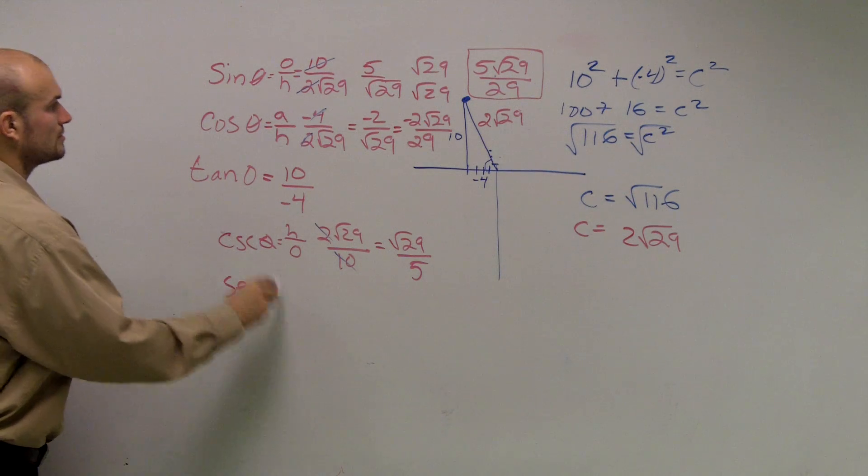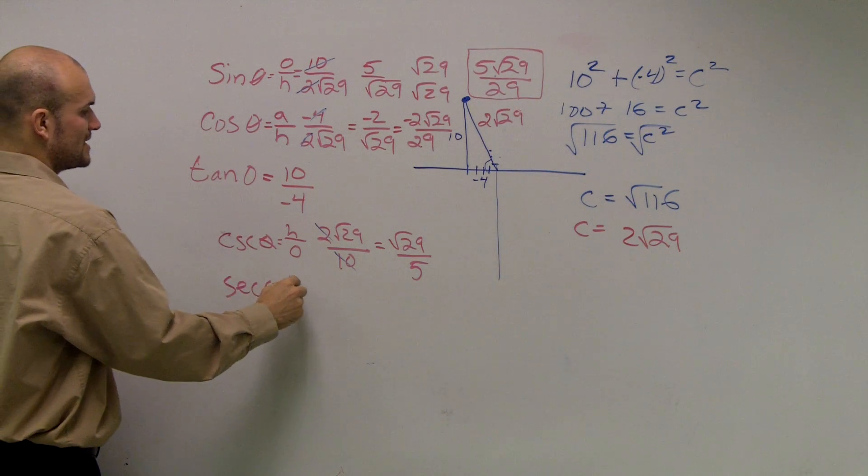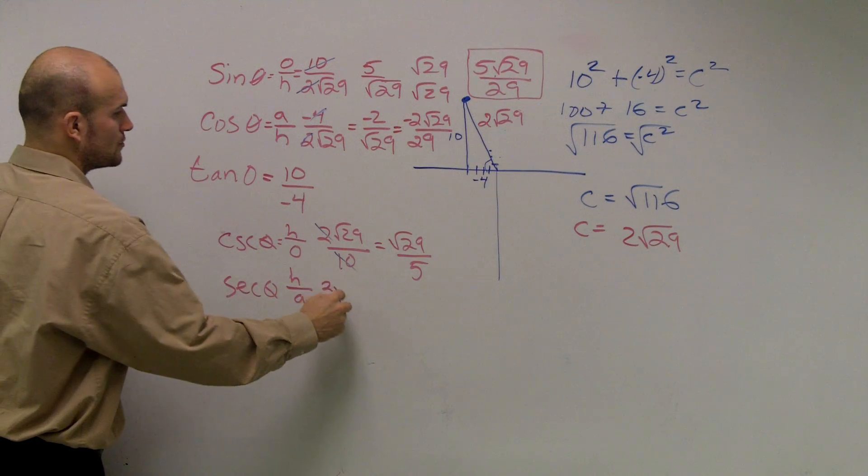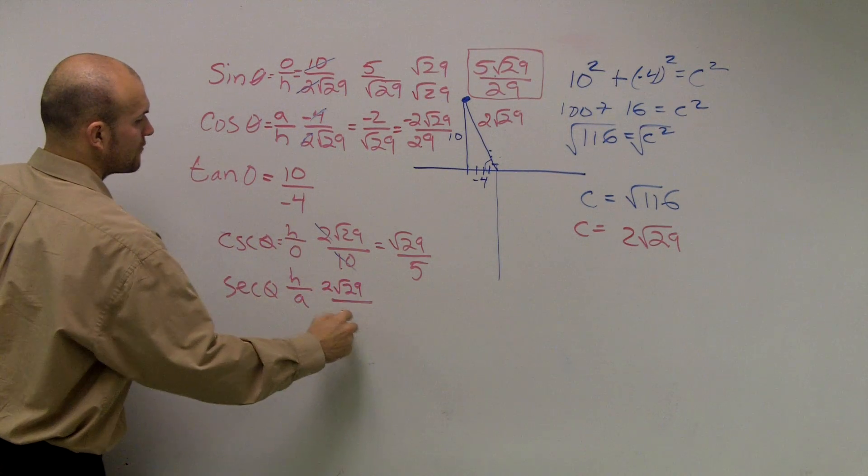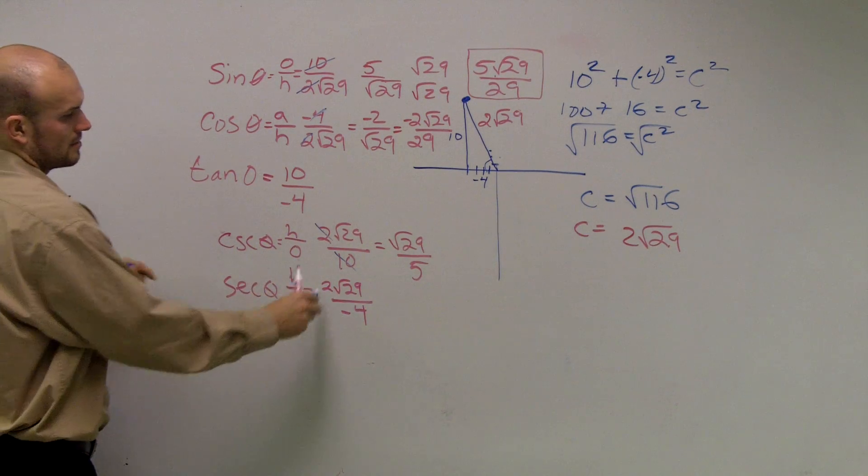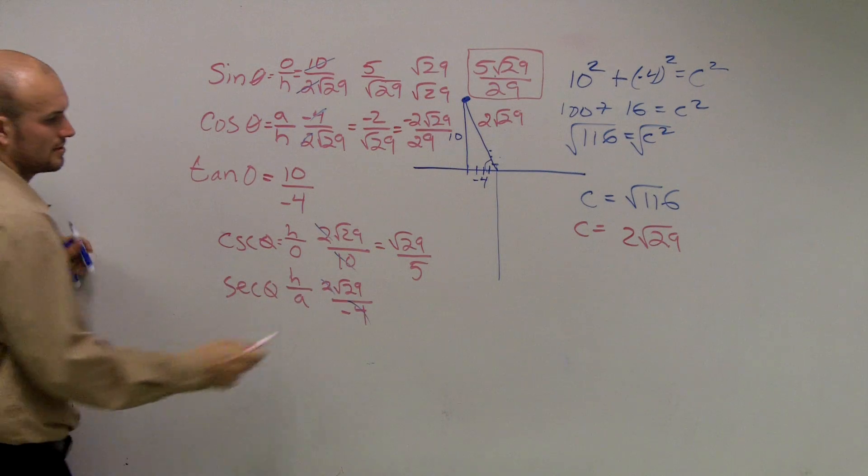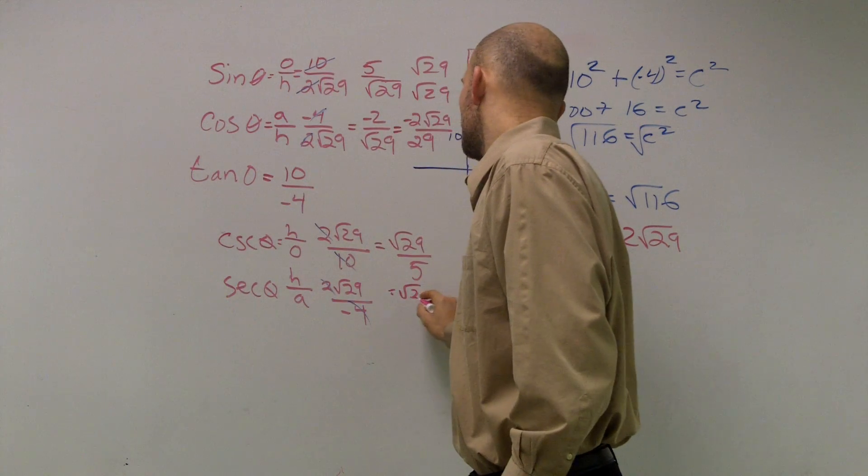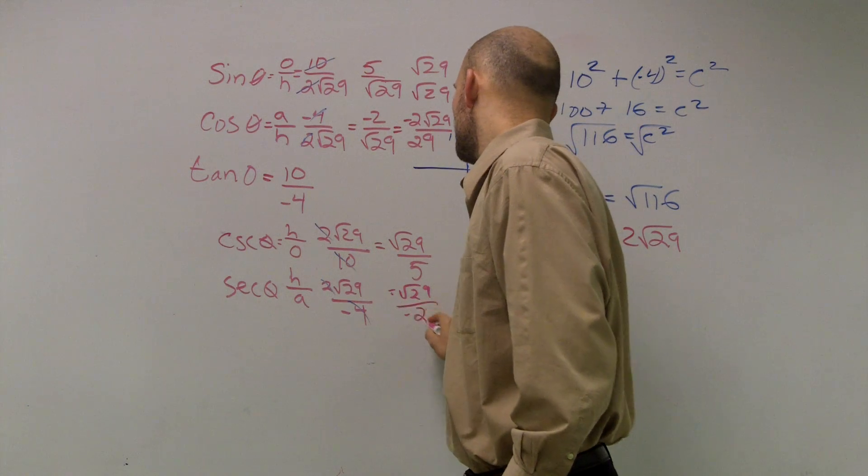Secant is the reciprocal of cosine. So that's going to be hypotenuse over adjacent. Well, the hypotenuse, again, was 2, radical 29, over negative 4. Those simplify to give me radical 29 over negative 2.